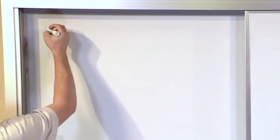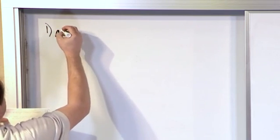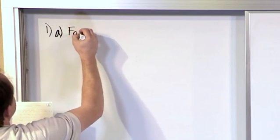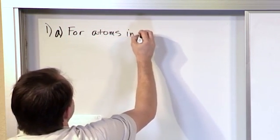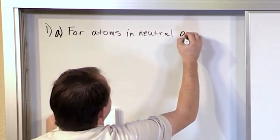Okay, so the very first rule, rule number one, is something we've actually talked about before. And so here we go. There's a part A and a part B. So let's call it 1A. For atoms in a neutral atom,